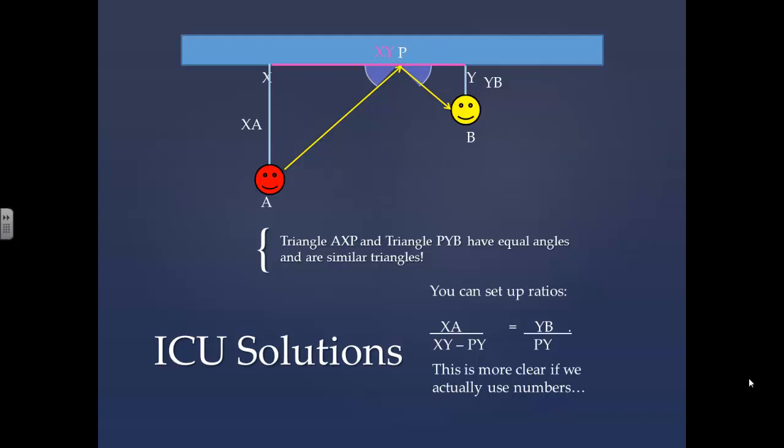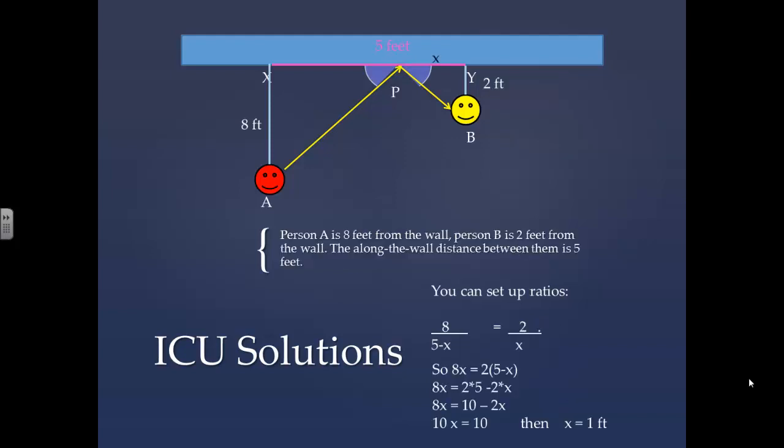This is more clear if we actually use numbers. Person A is 8 feet from the wall. Person B is 2 feet from the wall. The along the wall distance between them is 5 feet. You can set up ratios. 8 is to 5 minus x as 2 is to x. So eventually, x equals 1 foot.